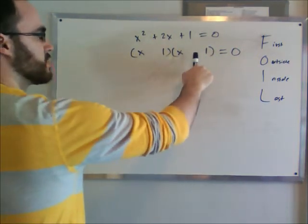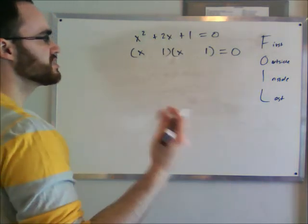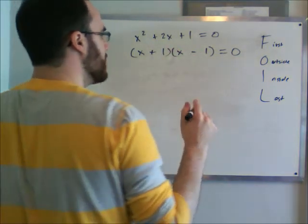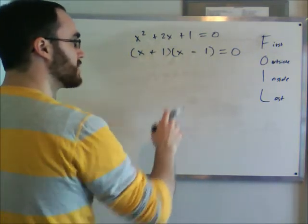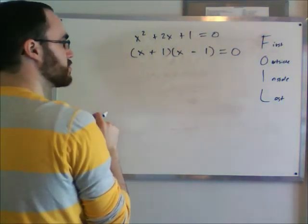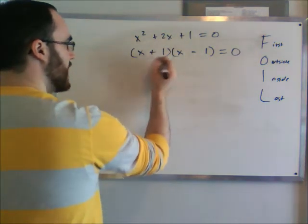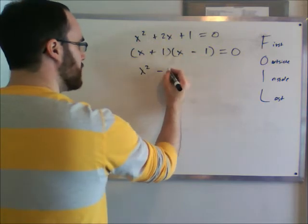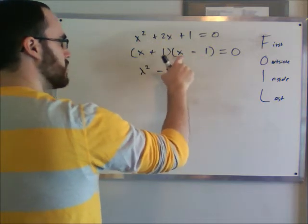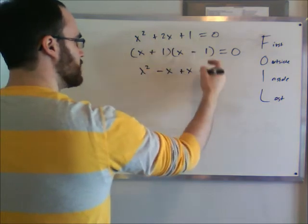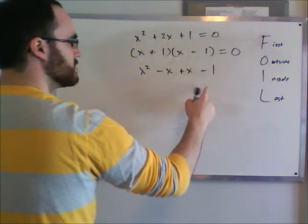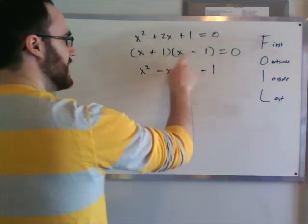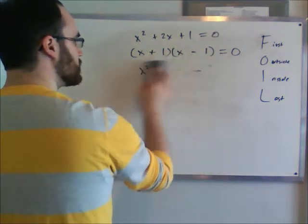The only thing left is to determine what are the signs inside here. Let's just guess. Let's say it's plus and minus. Now we can check that by multiplying this out again and see if it's the same as our first equation. So x times x becomes x squared. Outsides, x times minus 1 becomes minus x. Insides, 1 times x becomes plus x. Plus 1 times minus 1 becomes a minus 1. So we know already that this is not correct because we end up with a minus 1. So we can't have opposite signs. They have to be equal signs.